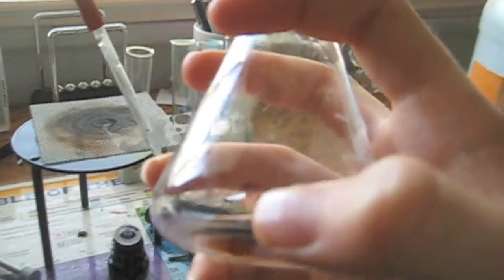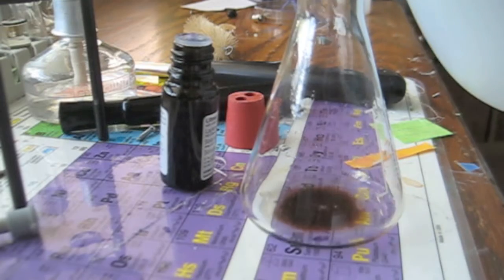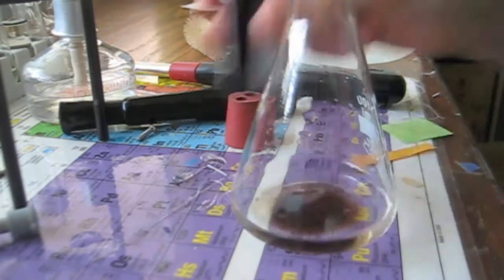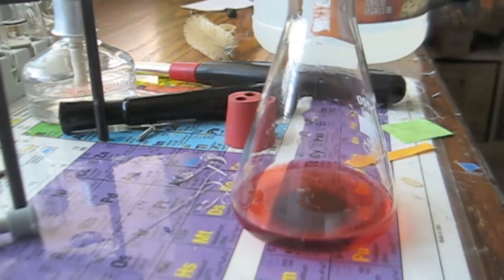Here's our flask and now we're going to fill it up with regular vinegar to the mark we made earlier with that marker. We'll fill up our flask with vinegar and now add some of the litmus solution, which is the indicator that we used before. Now we're ready.